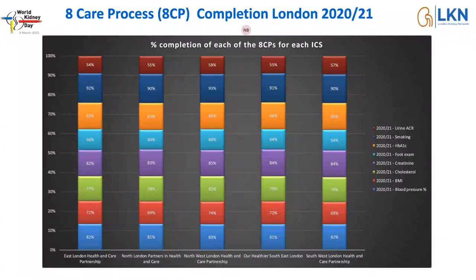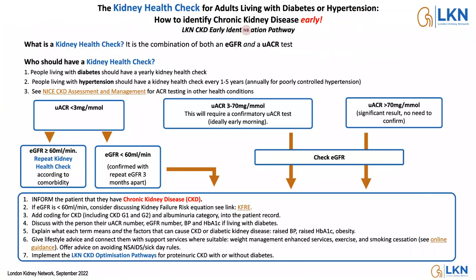More recent data from 2021 shows eight care process completion for people with diabetes across all integrated care systems in London. Urine ACR capture is sitting in the mid to high 50s at best. Comparing that to all other eight care processes — blood tests, smoking, weight — it's always a poor relation. Even though absolute numbers have gone up post-COVID, the percentages are still very similar, so urinary capture really is an area of work.